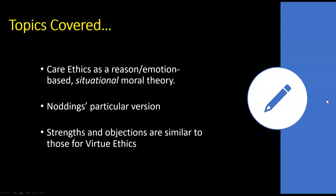Topics covered were care ethics as a reason/emotion-based situational moral theory, and Noddings' particular version of it. Slides for the strengths and objections were not included because they're really similar to those for virtue ethics.